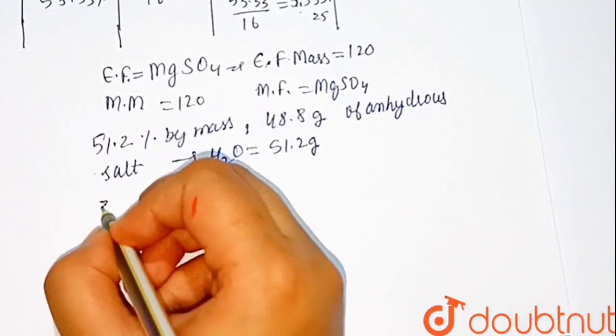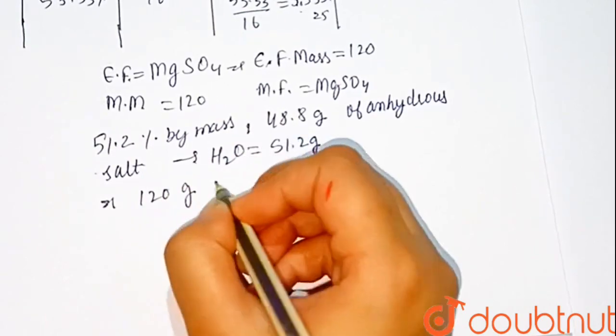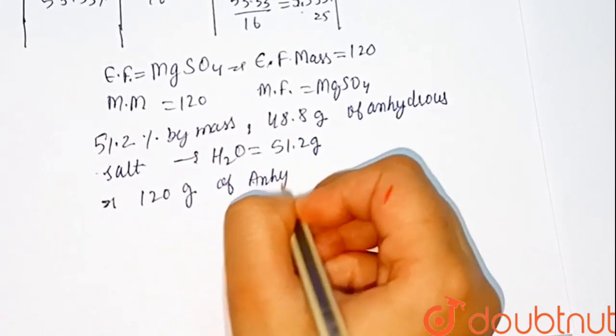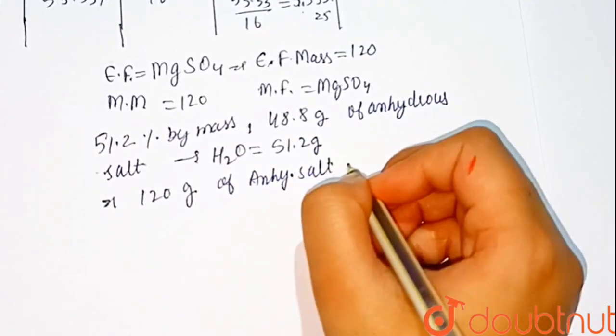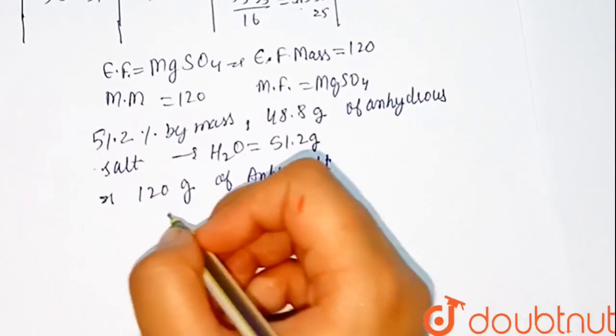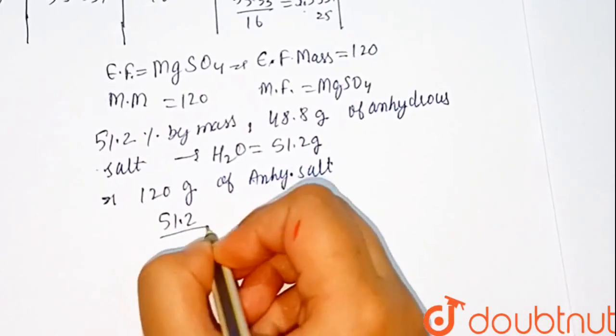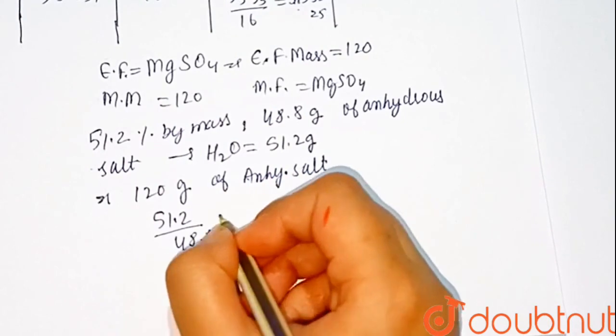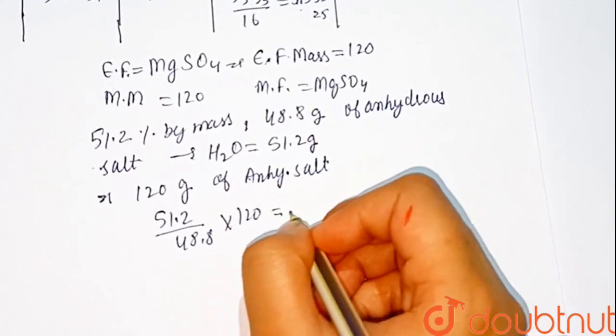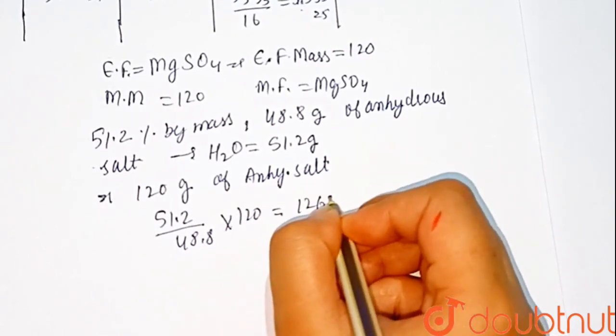So, 120 grams of anhydrous salt contain - we have to calculate - 51.2 divided by 48.8 multiplied by 120, which equals on solving 126.